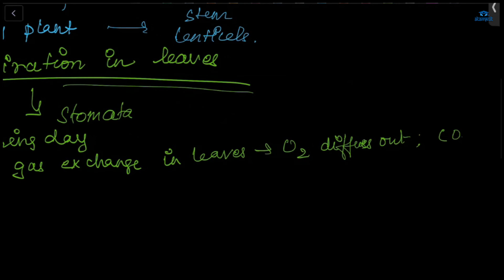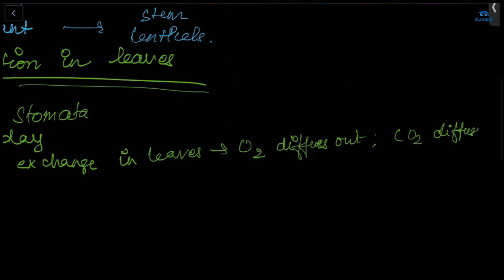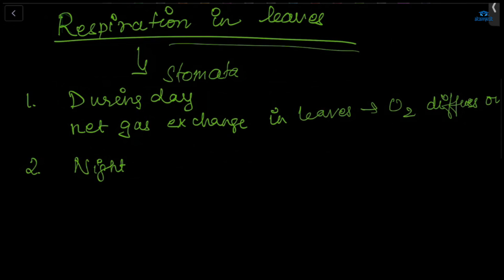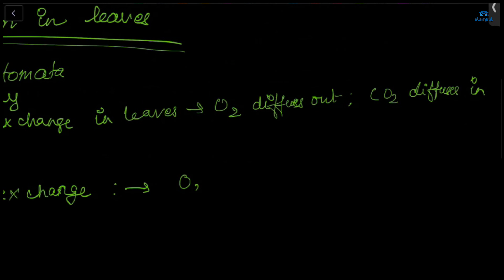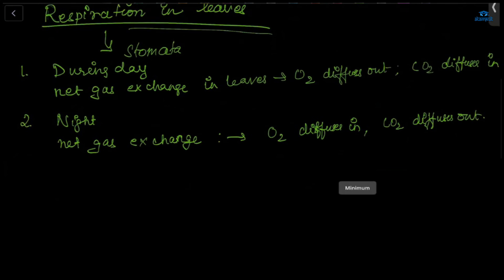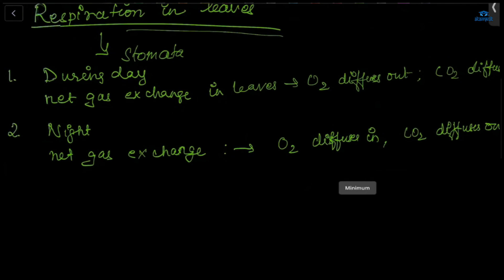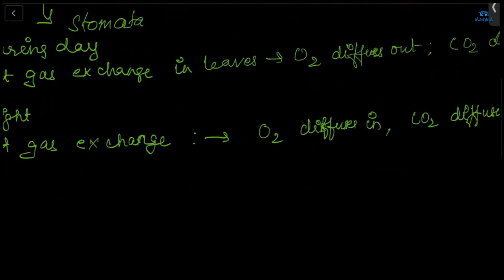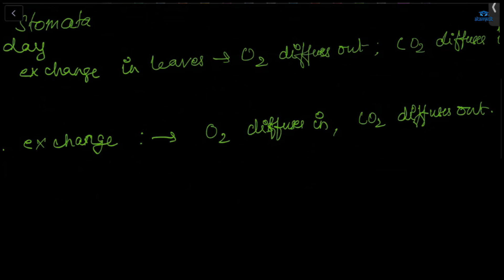At night there is no photosynthesis, so no oxygen is produced by the plant. Oxygen from the air diffuses into the leaves for respiration, and carbon dioxide is given out. The net gas exchange at night is: plants take in oxygen and release carbon dioxide. This is why plants release carbon dioxide at night, which is not beneficial to us.